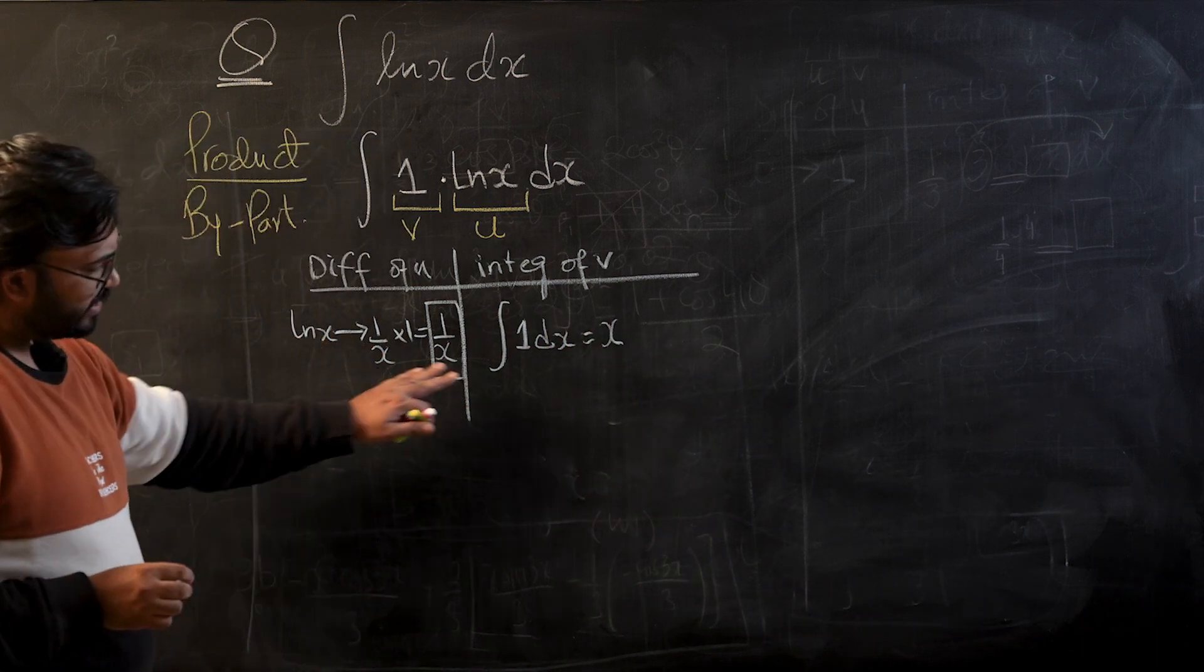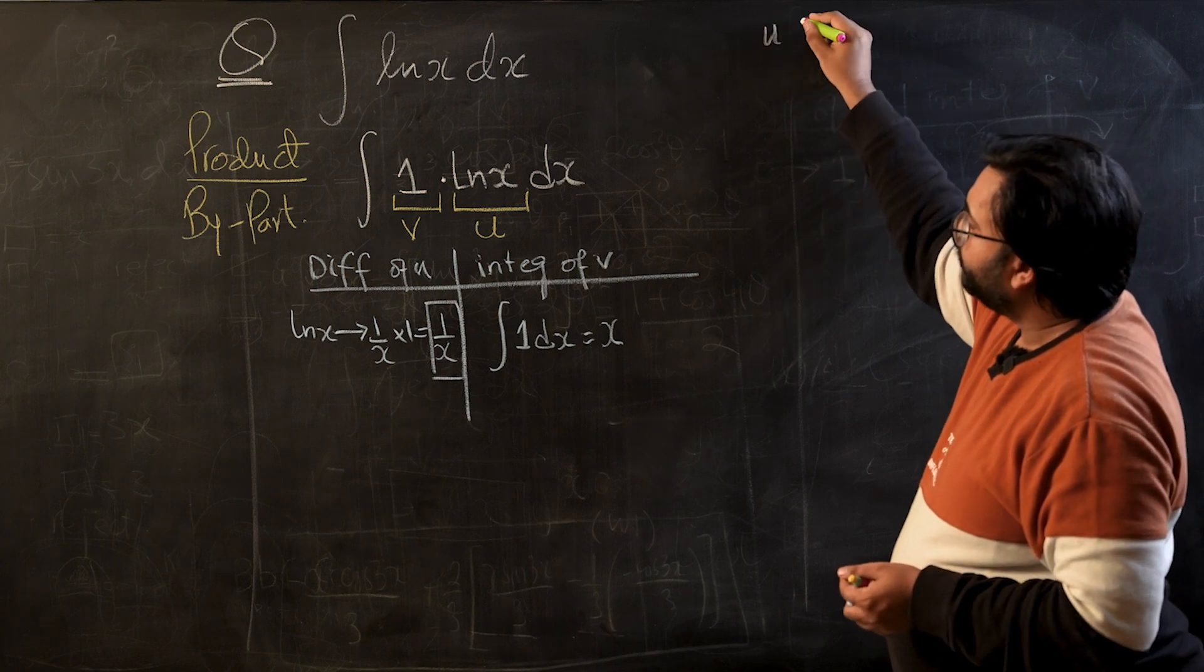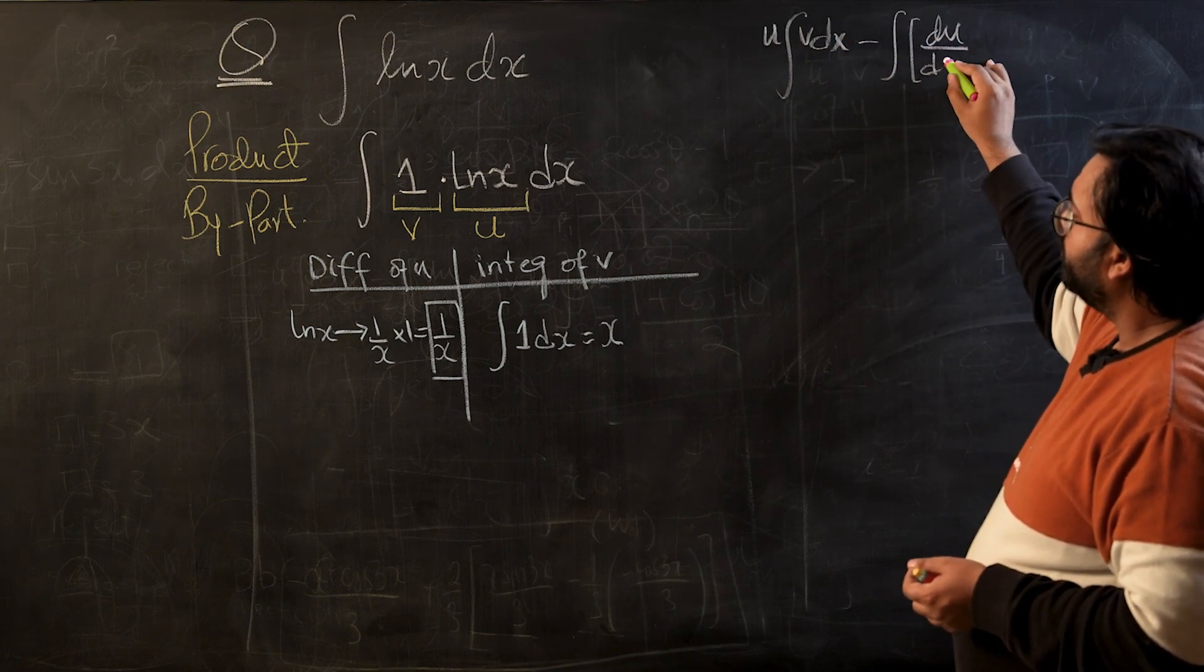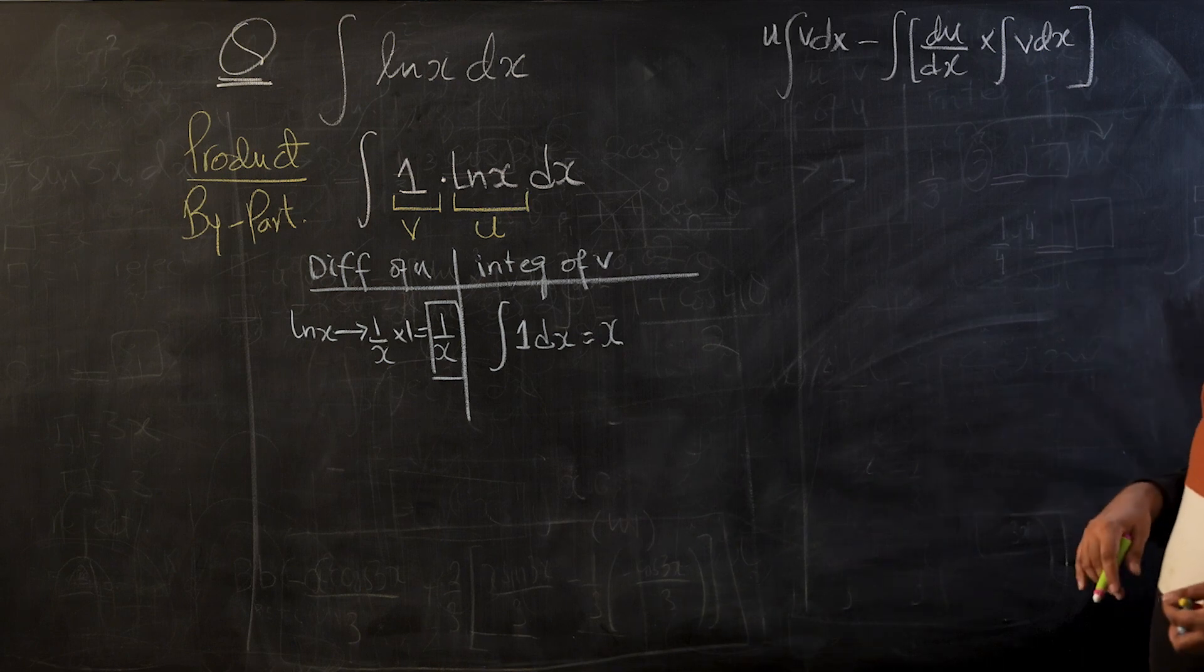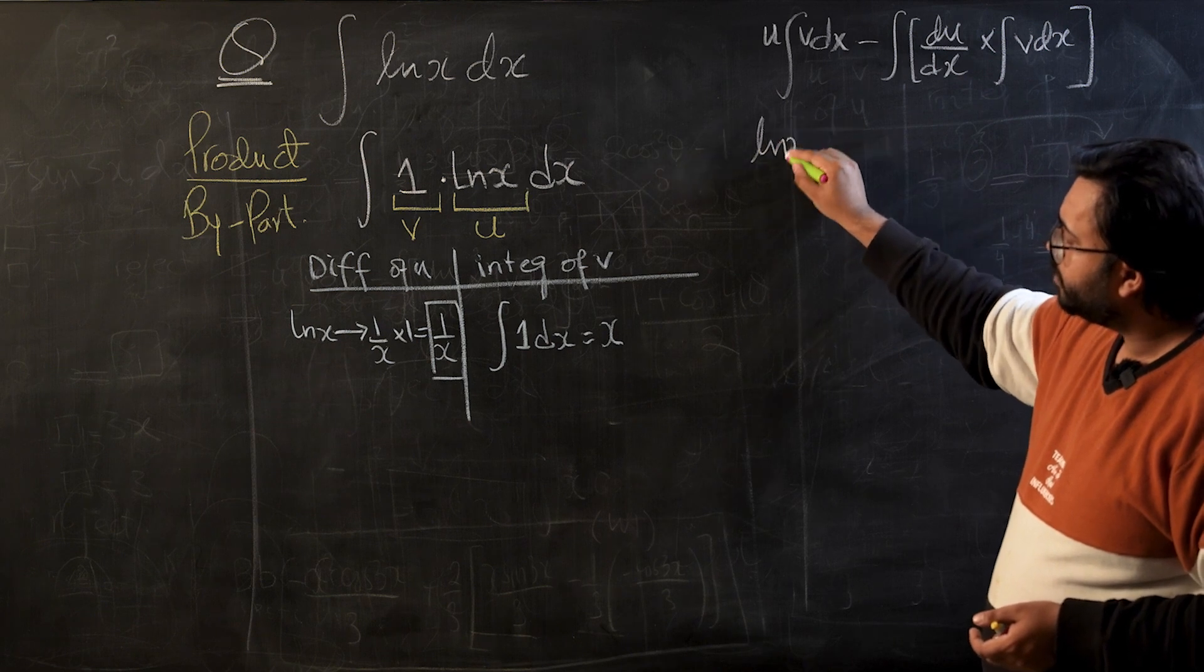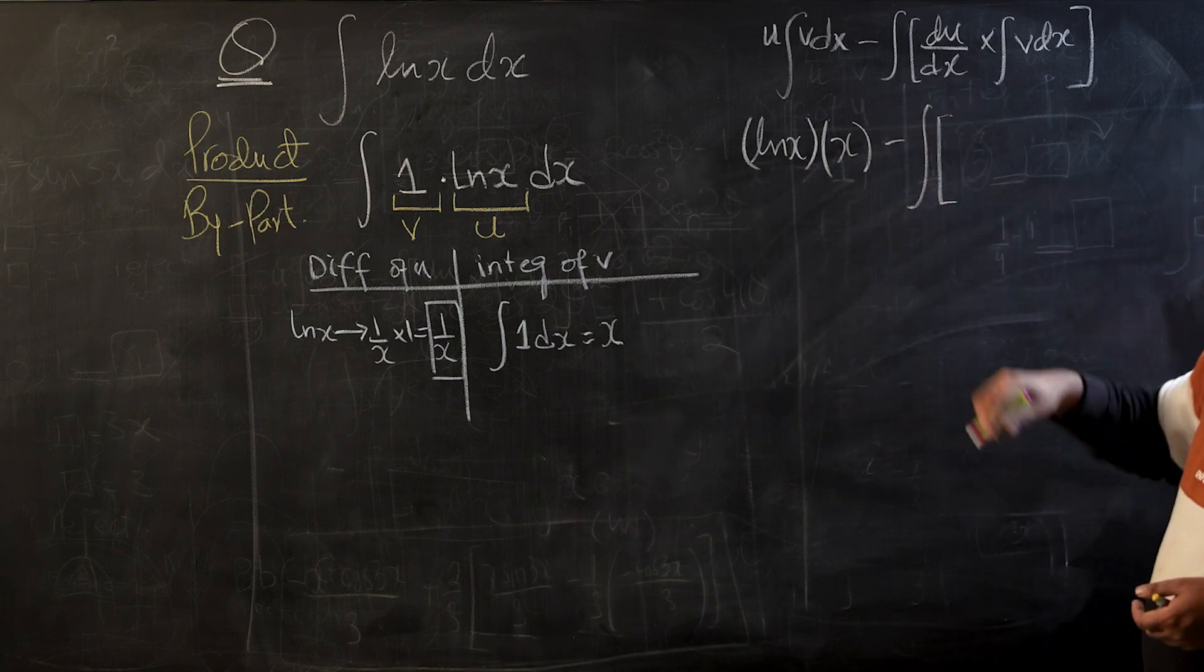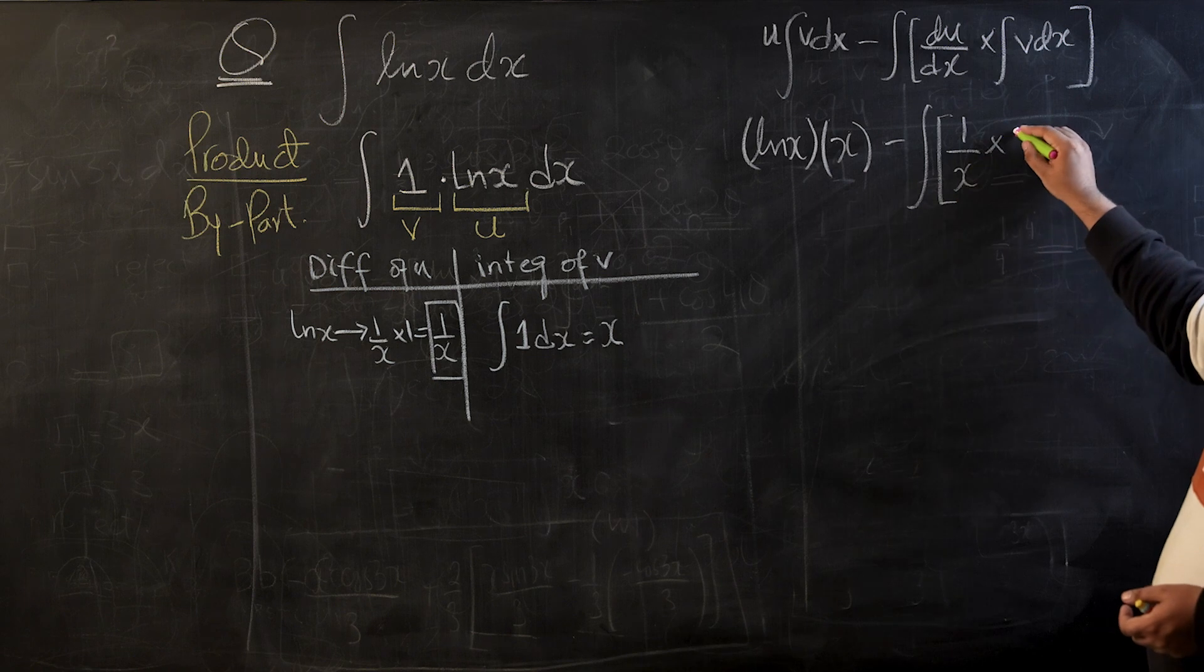With this data, I'm going to apply the product rule now. So u times integral of v minus the integral of differentiation of u times integral of v. So for u I'm going to use log of x, for integral of v I have x, minus the integral. Differentiation of u, you guys can see from there, is 1 over x, and integral of v is going to be x.